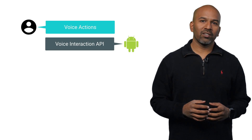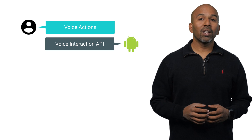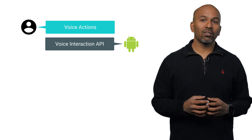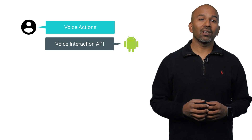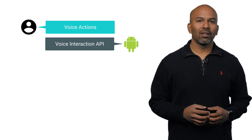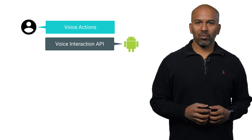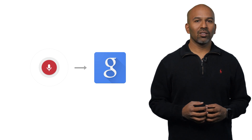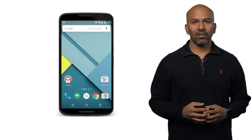My colleague Barnaby and I will show you how voice actions, together with the Voice Interaction API, make it possible for you to build conversational voice experiences like TuneIn's. Let's first look at a brief system overview. It starts with OK Google, also known as the hot word. That triggers the assistant — in this case, the Google app — and it starts listening to the user.